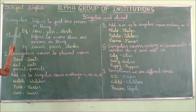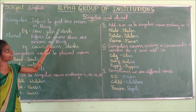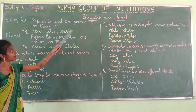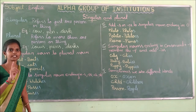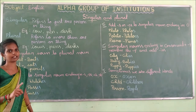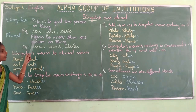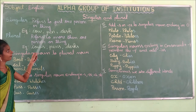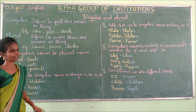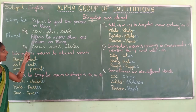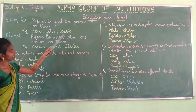What is meant by singular? Singular refers to just one person or thing. For example: cow, pen, desk. Repeat it with me — singular: cow, pen, desk.